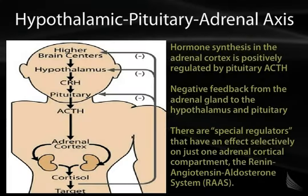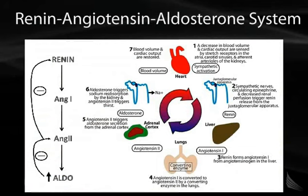The two systems we're talking about are the HPA axis — CRH from the hypothalamus, ACTH from the pituitary, cortisol from the adrenal gland — and the RAA axis, which is the renin-angiotensin-aldosterone system. We'll cover the RAA system first and then get back to the HPA axis.